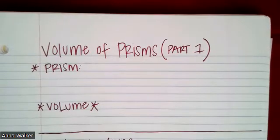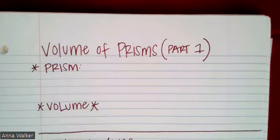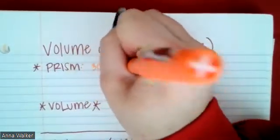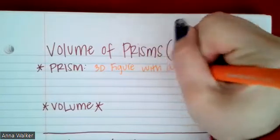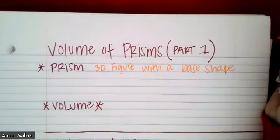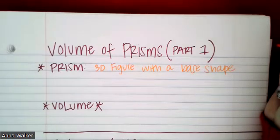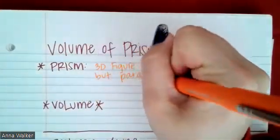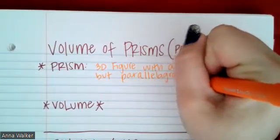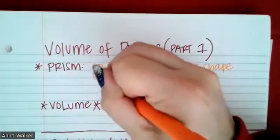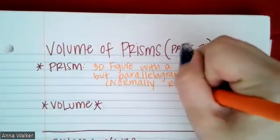In the first section, we're going to talk about what a prism is. A prism is a 3D figure with a base shape and parallelogram sides, which are typically rectangles. The base shape could be any of the kinds of shapes we've been talking about — trapezoid, triangle, circle, rectangle, square, or parallelogram. So it's a 3D figure with a base shape but parallelogram sides, and normally those sides are rectangles.